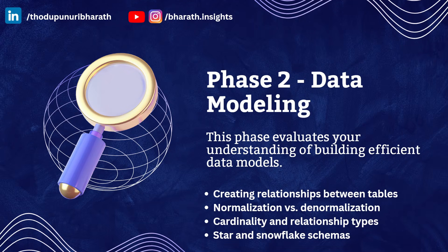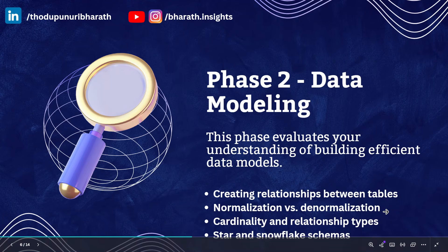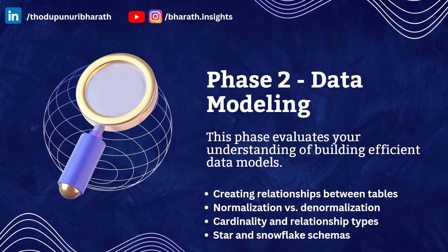The second phase is Data Modeling, which evaluates your understanding of building efficient data models. Once you've loaded multiple tables, the panel will check whether you understand data modeling concepts — how to create relationships between tables, cardinality types, and filter directions. They'll also ask about normalization versus denormalization. There are four cardinality types: one-to-one, one-to-many, many-to-one, and many-to-many, with single or both filter directions.